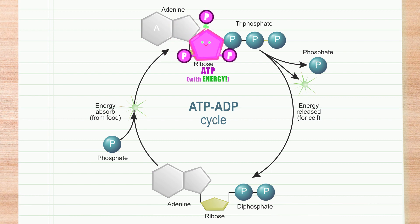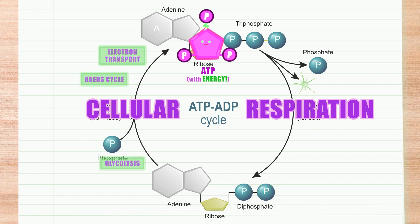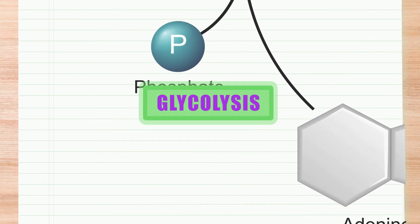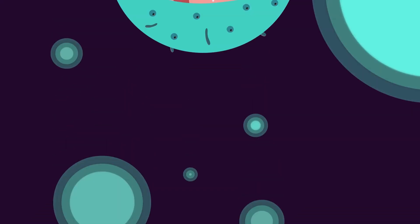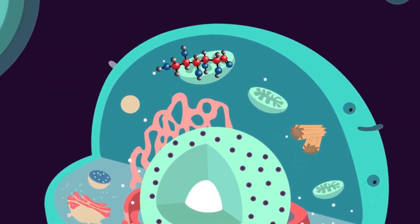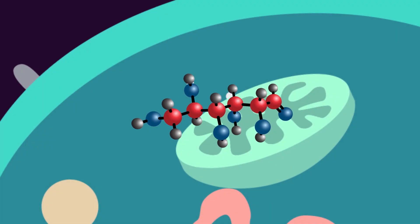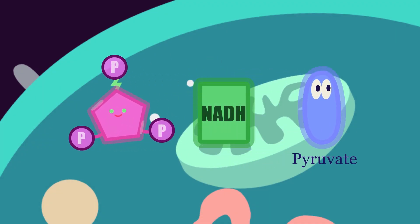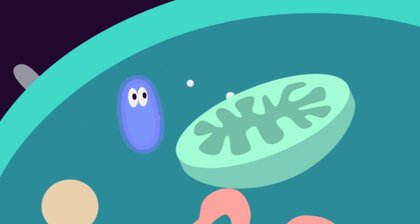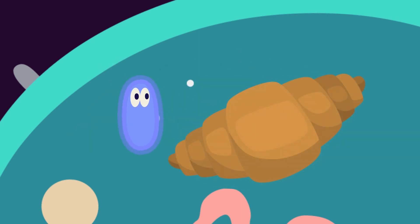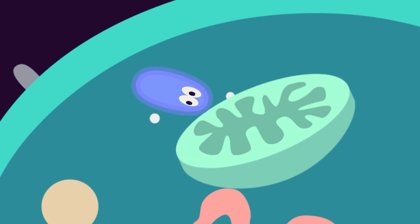The process of converting glucose to ATP is called cellular respiration. The first chemical reaction required for ATP generation is called glycolysis. The glucose molecules are decomposed first, creating ATP, NADH, and a smaller compound called pyruvate. Pyruvate moves into the mitochondria in the cell, which is the part of the energy production in the cell that looks like a mini croissant. When entering the mitochondrial substrate, the pyruvate becomes acetyl-CoA.